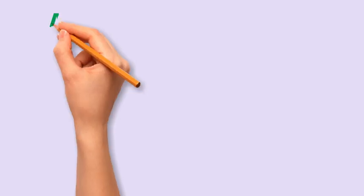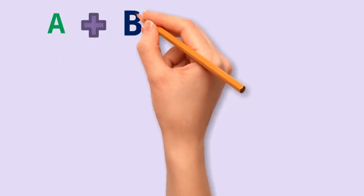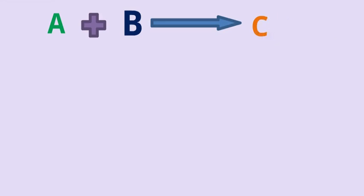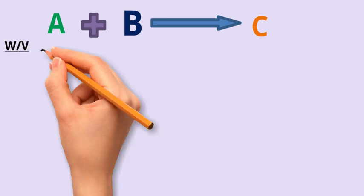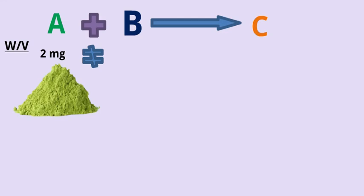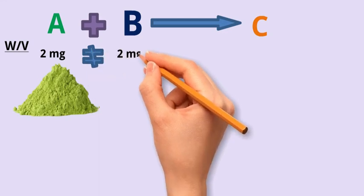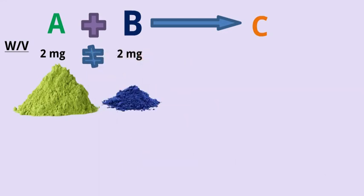But when we are preparing a chemical reagent to be used in some reactions, suppose we have the chemical A react with the chemical B to generate the chemical C. So in this case, if we are preparing the chemicals A and B by using weight to volume unit, we might face some issues because 2 mg per ml of A is not equal to 2 mg per ml of chemical B. That is because the molecular weight of A is different from B.